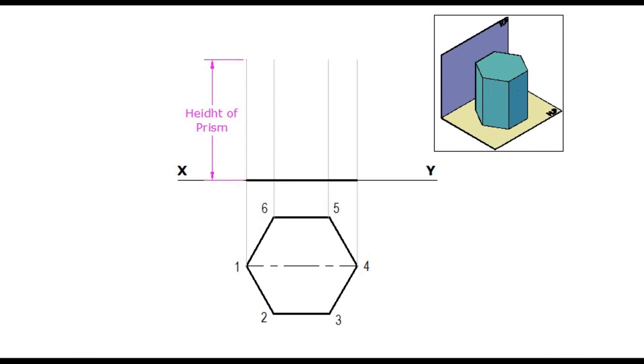Name the corners in the elevation as 1 dash, 2 dash, 3 dash, 4 dash, 5 dash, and 6 dash. By this the projection part is over.